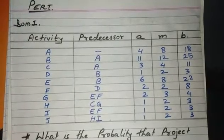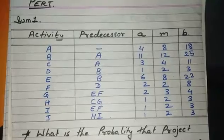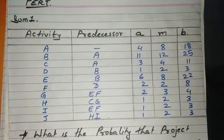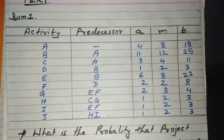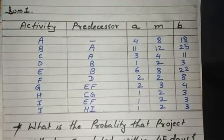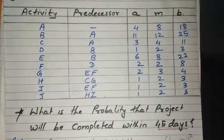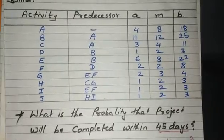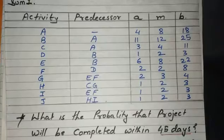Now let's solve one sum. We are given a number of activities A to J, with predecessors as we have seen in previous sums. These three times are given: a, m, and b. They have asked what is the probability that the project will be completed within 45 days.